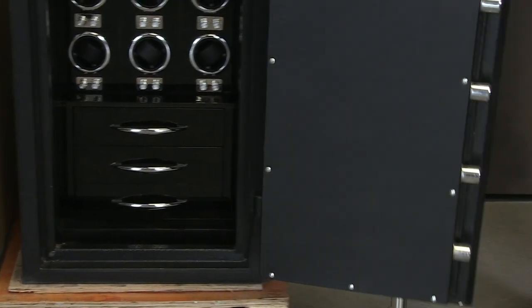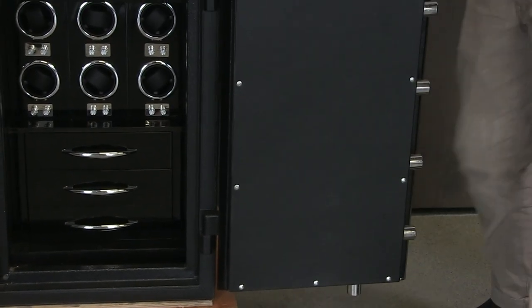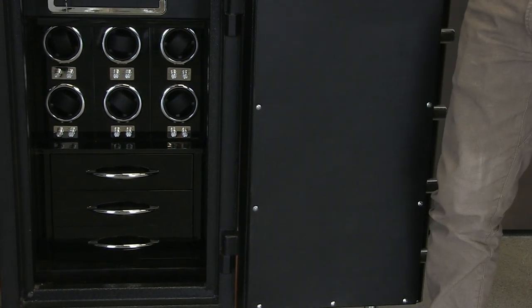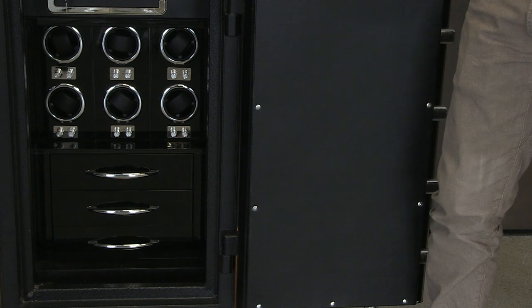On the back side of the door where the hinges are, let's say someone tries to cut the hinges off, there's this dead bar that runs the length of the door and that also prevents someone from just prying the door open or just taking the door off.